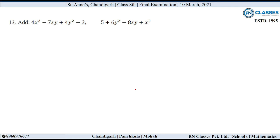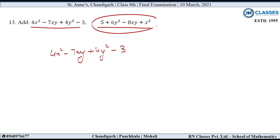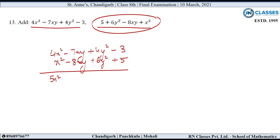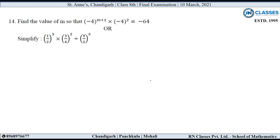13th question: Add the two expressions. First expression: 4X square minus 7XY plus 4Y square minus 3. Second expression: X square minus 8XY plus 6Y square plus 5. Adding like terms: 4X square plus X square = 5X square; minus 7XY minus 8XY = minus 15XY; 4Y square plus 6Y square = 10Y square; minus 3 plus 5 = 2. So the answer is 5X square minus 15XY plus 10Y square plus 2.